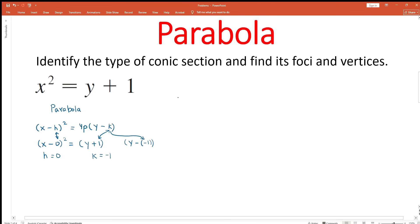Next, we can find the value of p. The coefficient of the expression y + 1 is 1. There is an invisible one outside the parentheses. Therefore, 4p = 1. We can use this equation to find the value of p. We can divide both sides by 4. So p = 1/4.